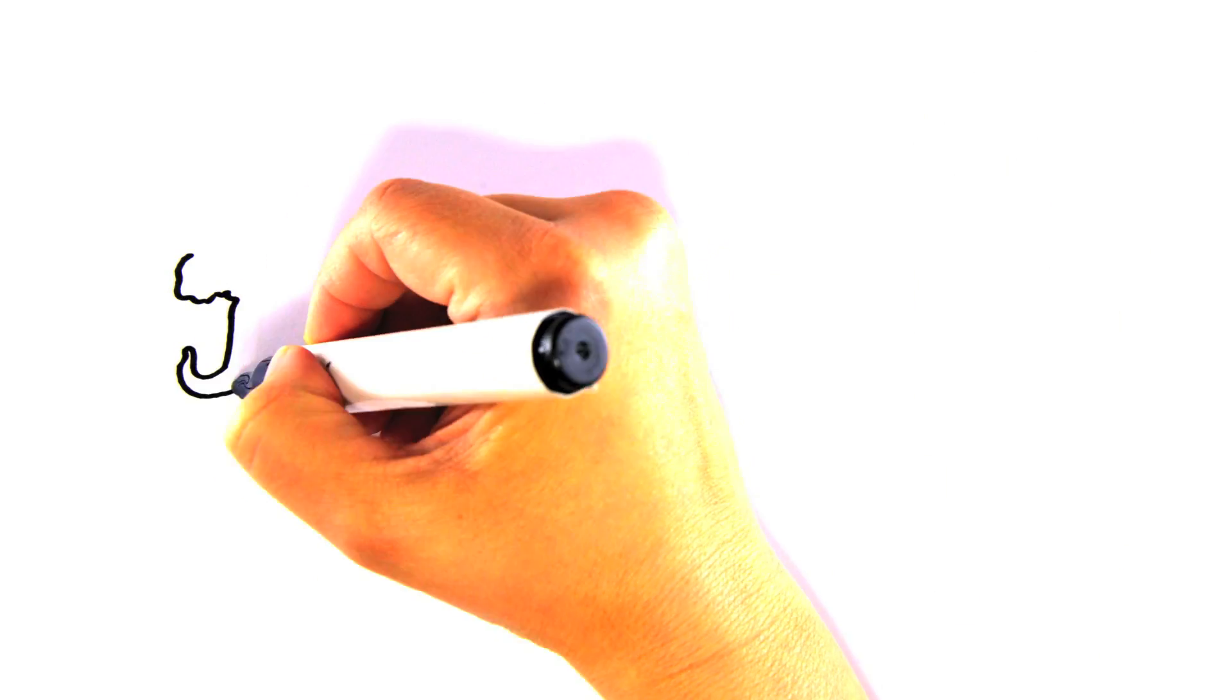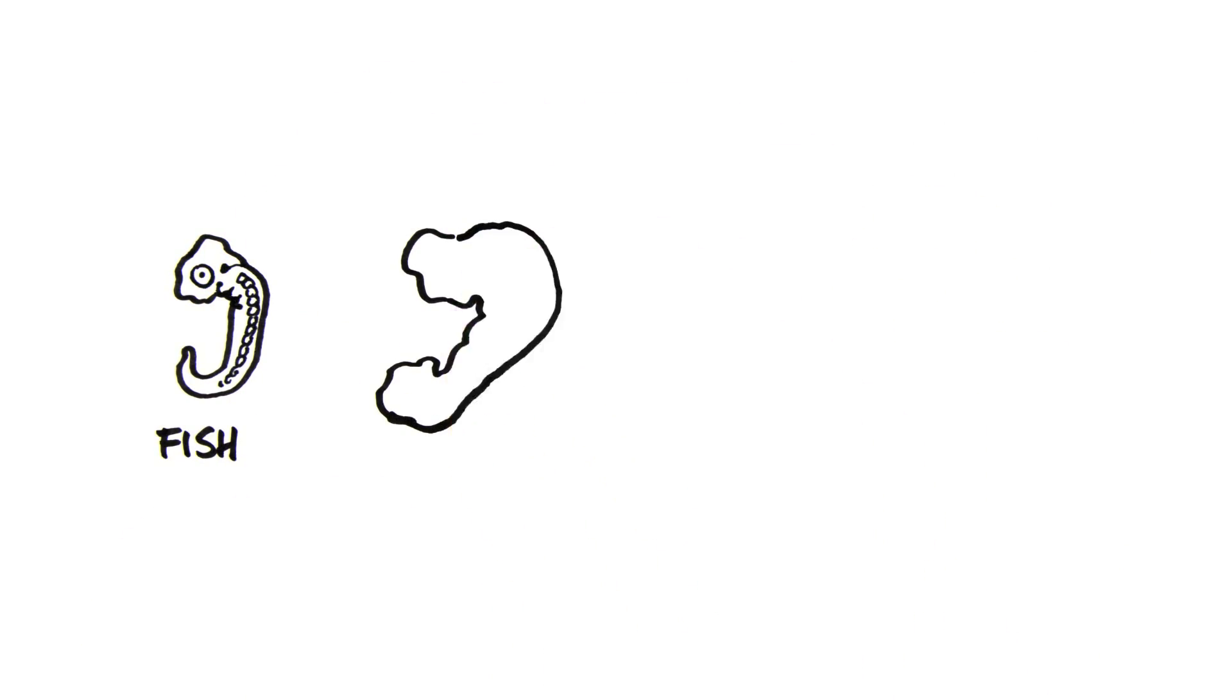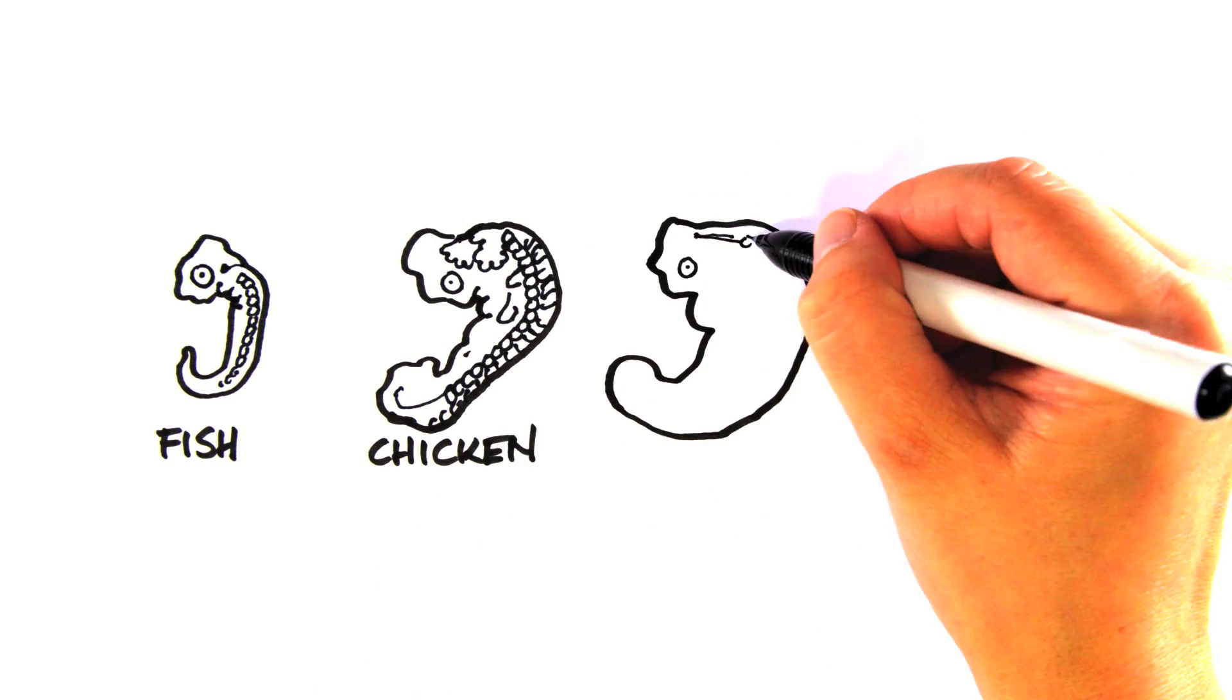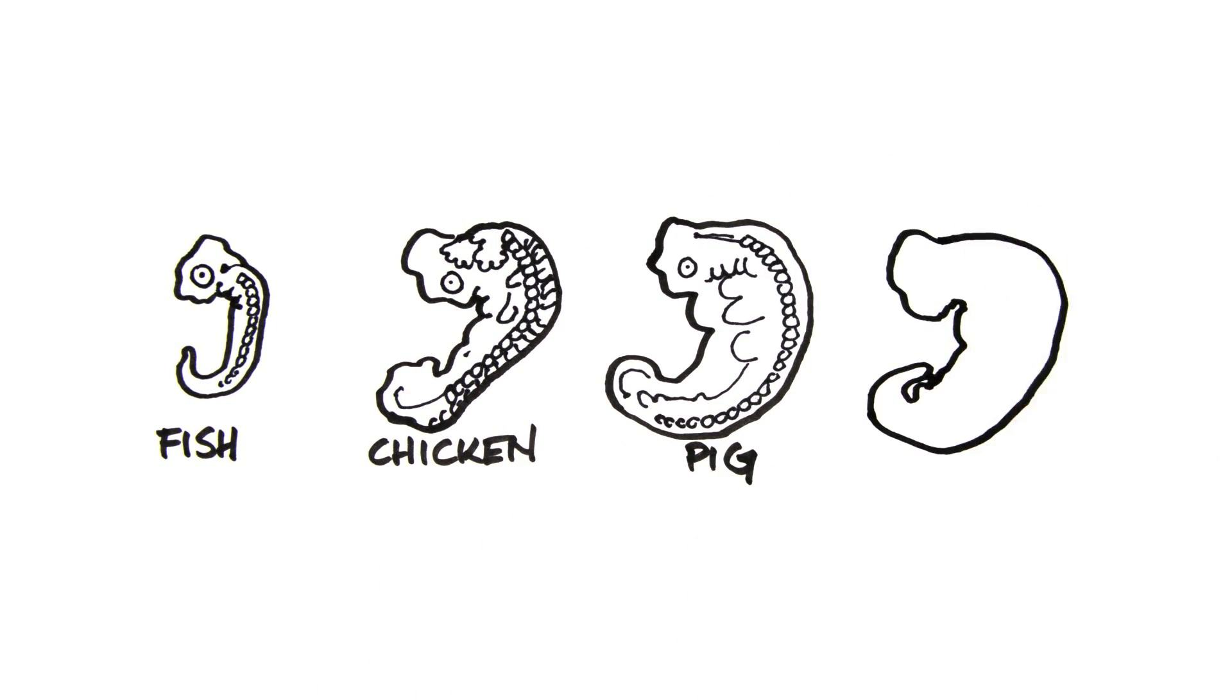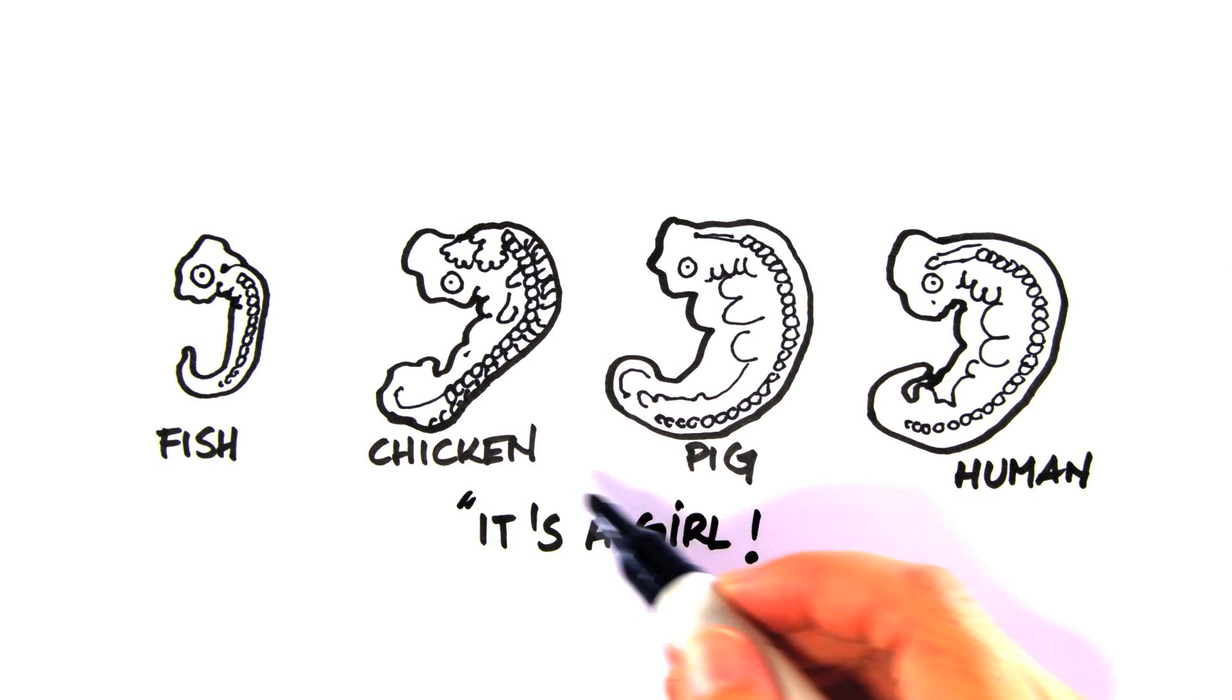One important aspect is that embryonal development is very similar throughout the vertebrae kingdom. Zebrafish embryos grow their organs the same way as humans, only 20 times faster.